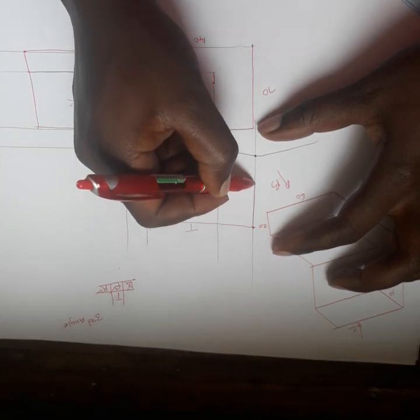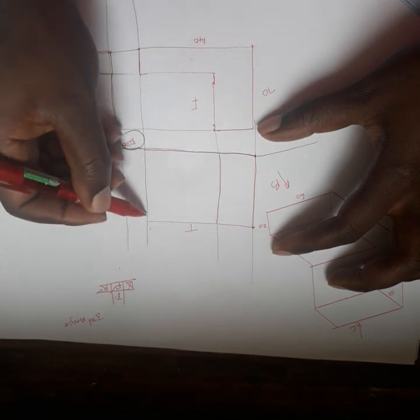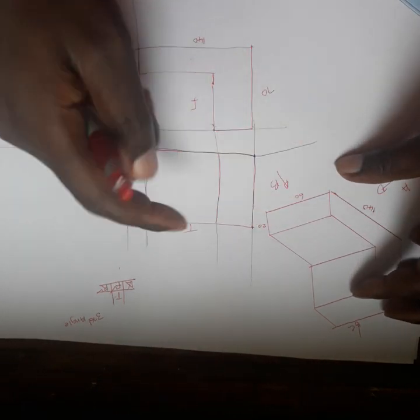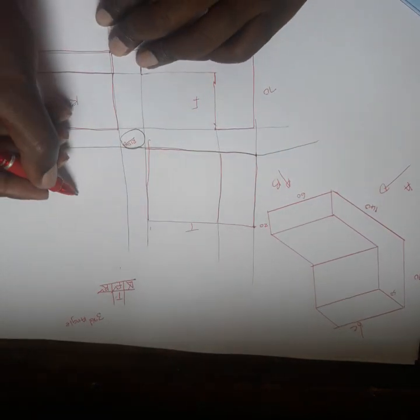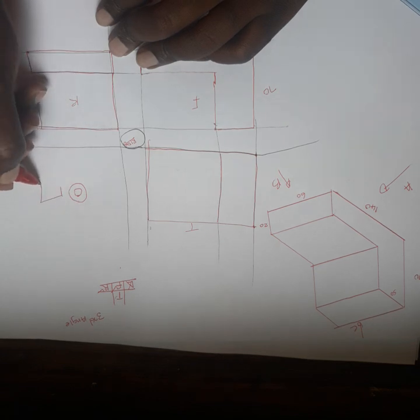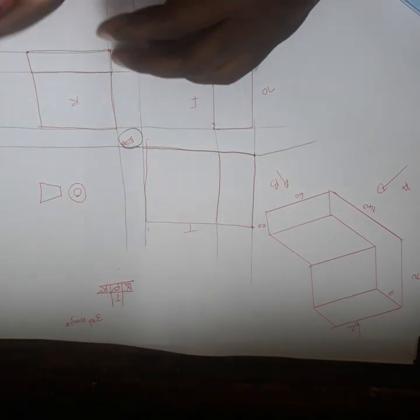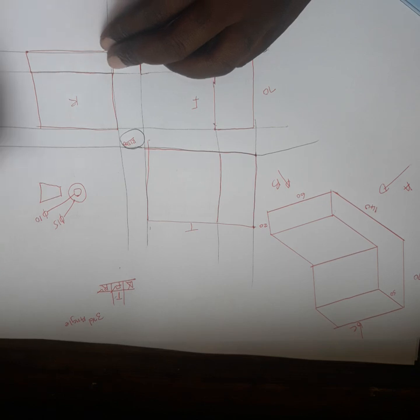This one goes here, so this top part is this one, then this one is this one. The symbol for dihedral angle is like this. The diameter of this one you can make 15, and for the smaller one, 10.